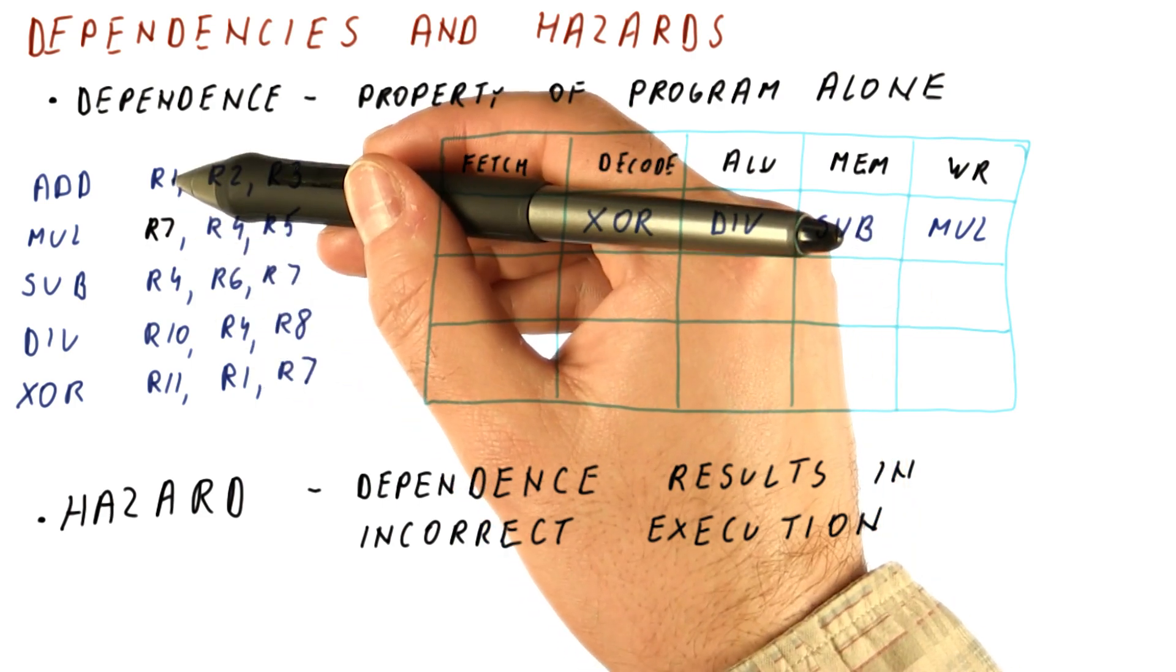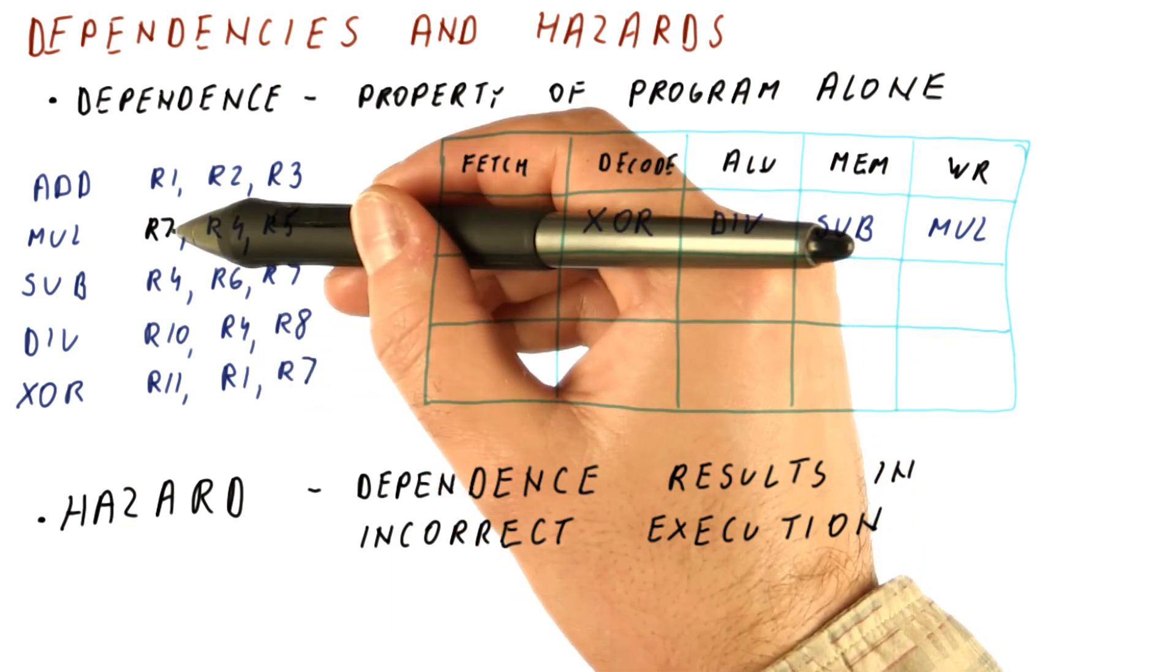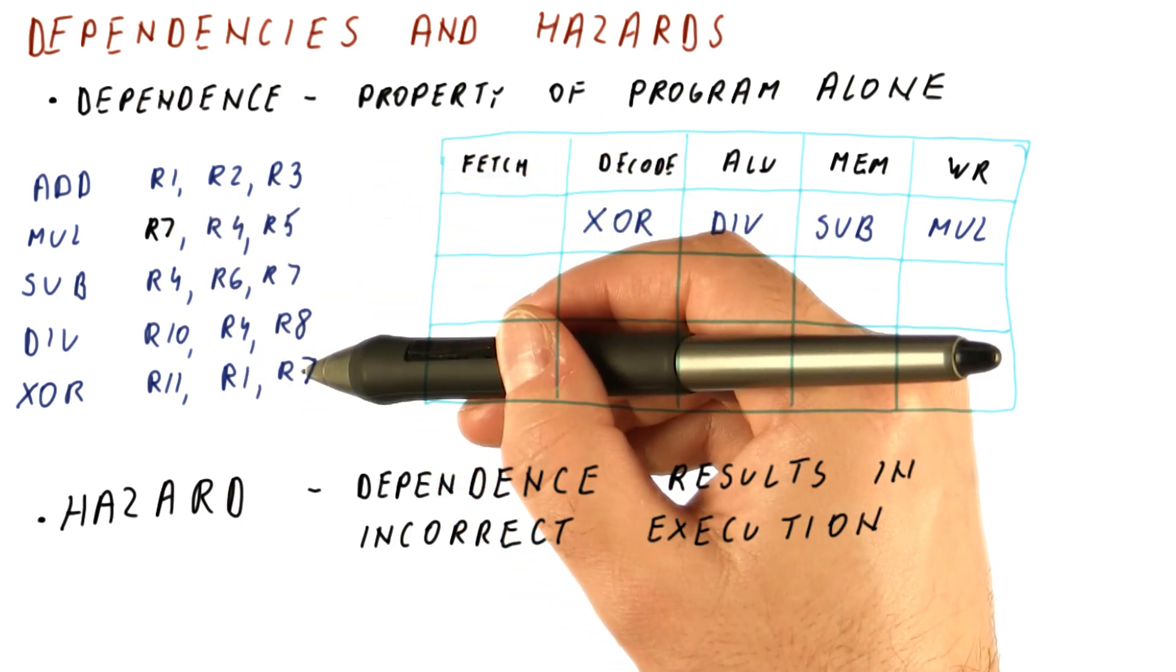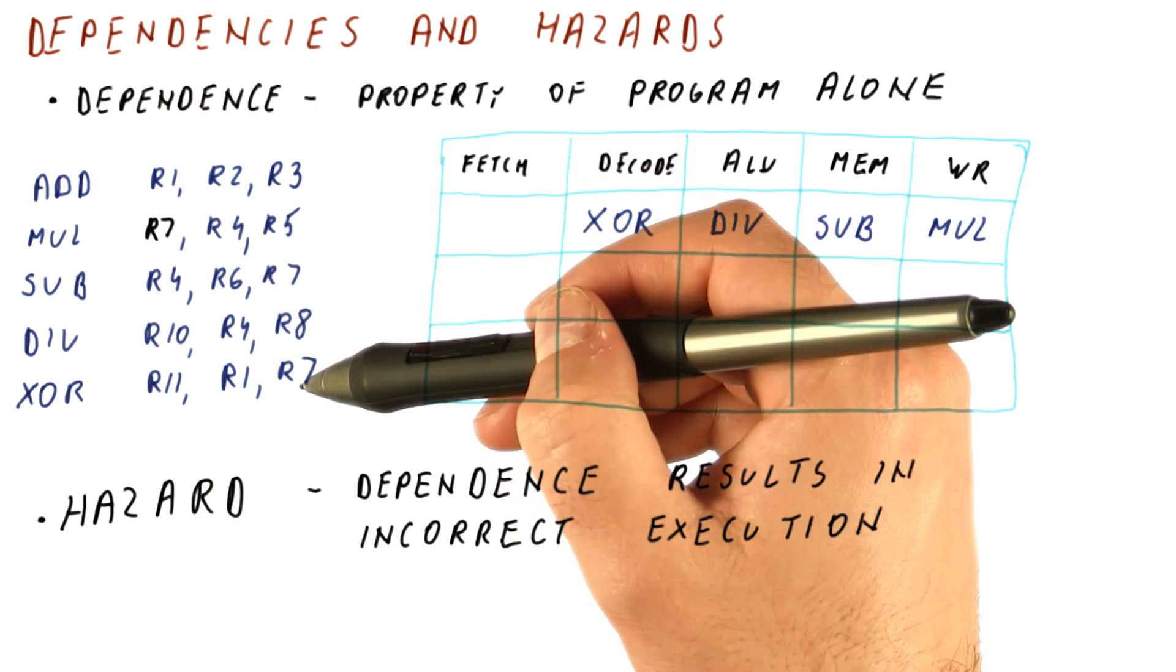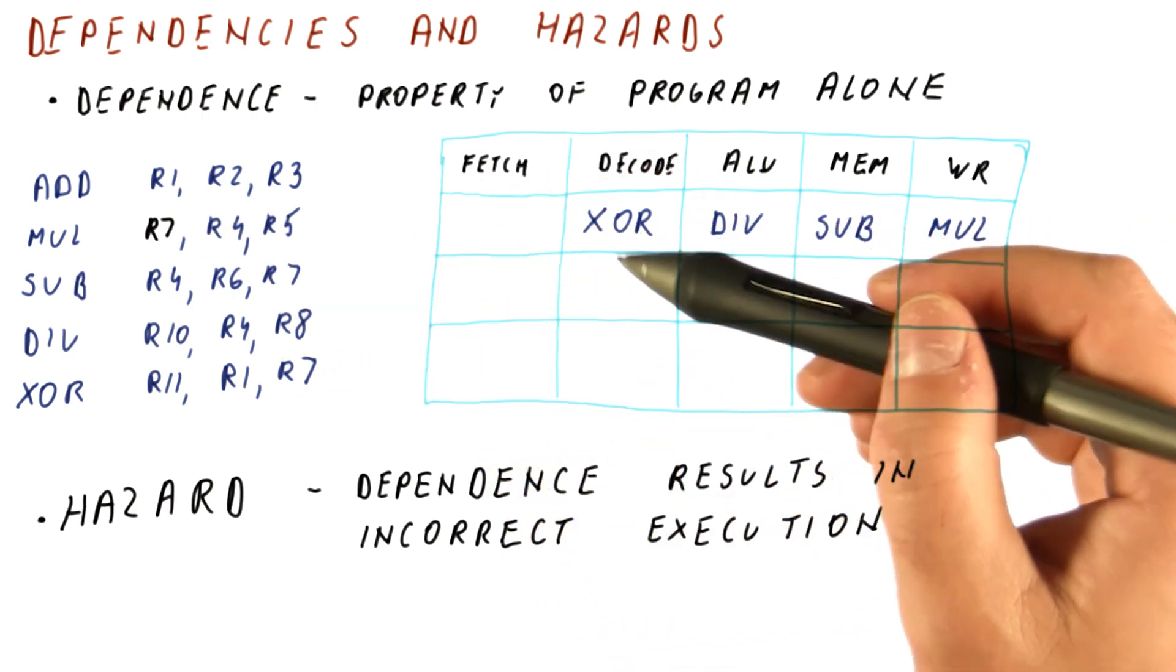Yes, there is. R1 produced by the add should be used by the XOR, and there is also dependence between the multiply and the XOR. But let's see if these dependencies are hazards in this particular pipeline.